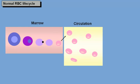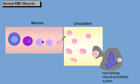As the cell reaches its 120-day sell-by date, macrophages in the reticuloendothelial system, mainly in the spleen, recognize them as being too old and remove them from the circulation.